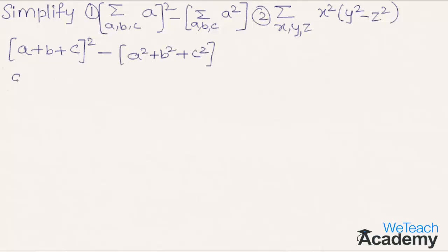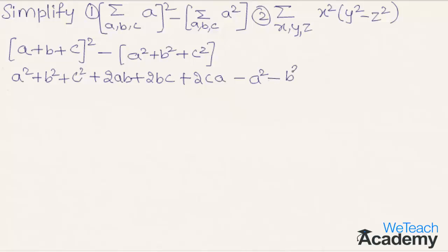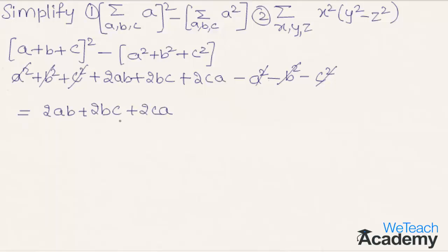We know the formula (a + b + c)² = a² + b² + c² + 2ab + 2bc + 2ca. Subtracting (a² + b² + c²), the minus a² and plus a² cancel, minus b² and plus b² cancel, and minus c² and plus c² cancel. So we get 2ab + 2bc + 2ca.